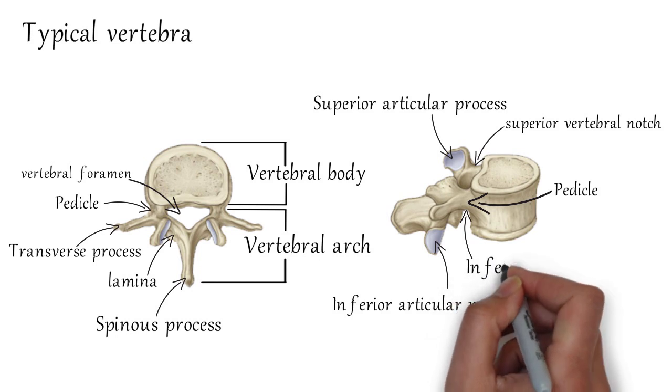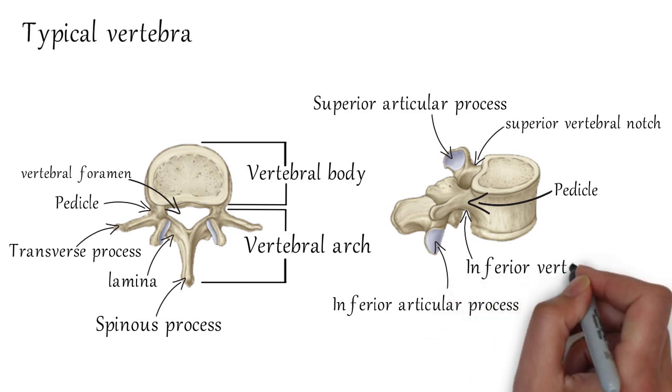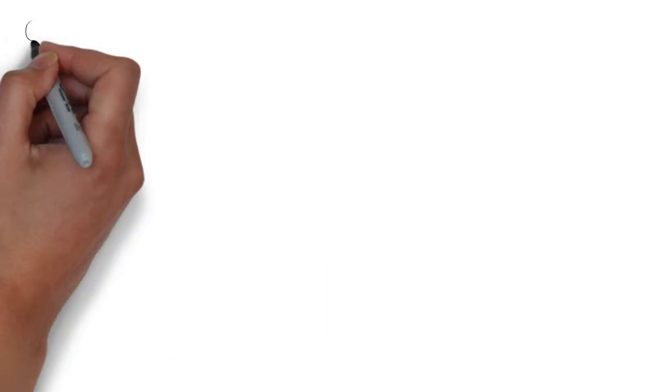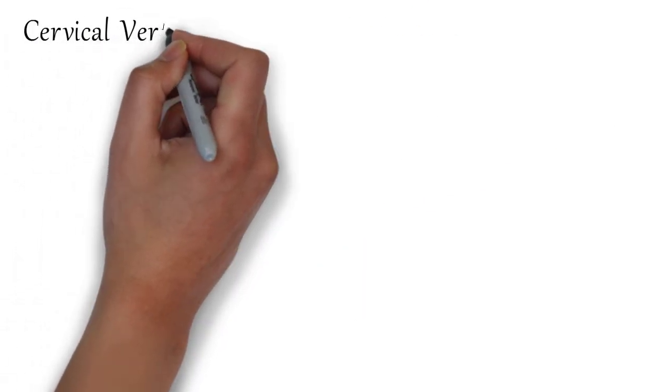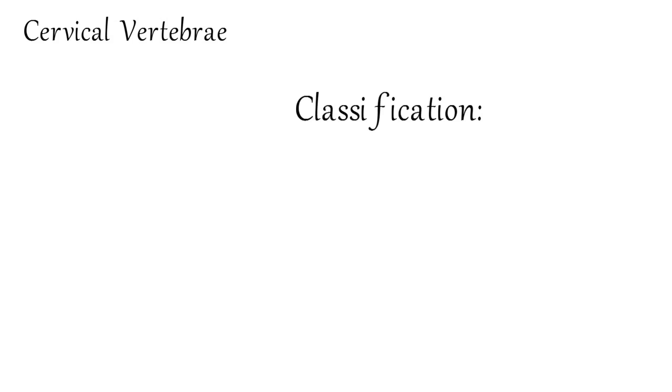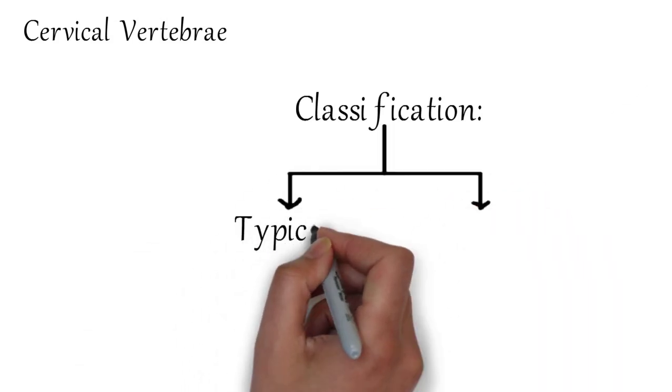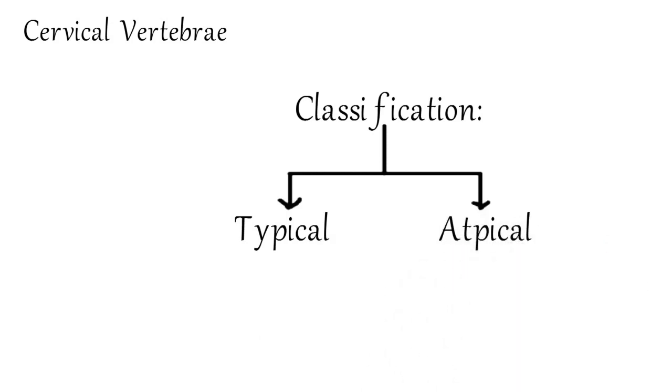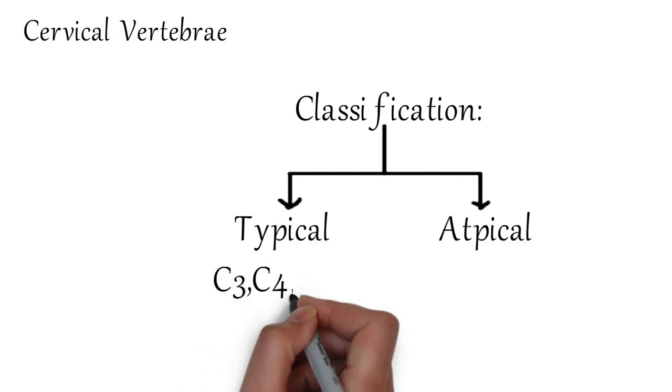In the thoracic region. Now let's start with cervical vertebrae. The cervical vertebrae are identified by the presence of foramen transversaria. There are 7 cervical vertebrae, out of which 3 to 6 are typical, while the first, second, and seventh are atypical.